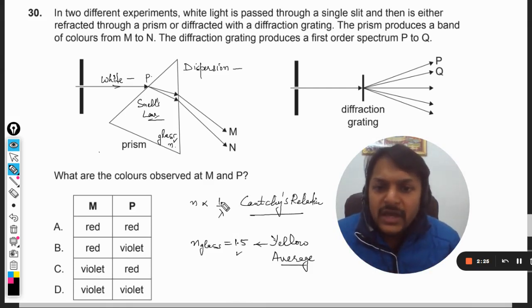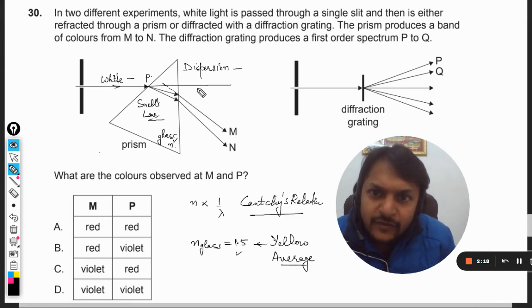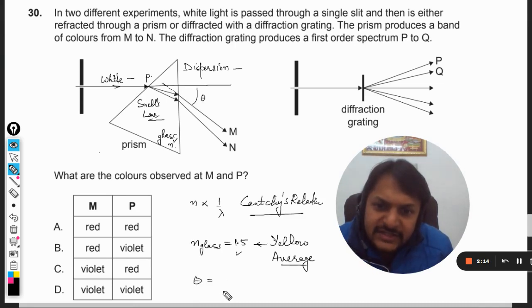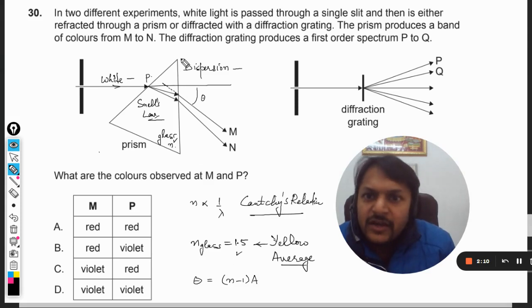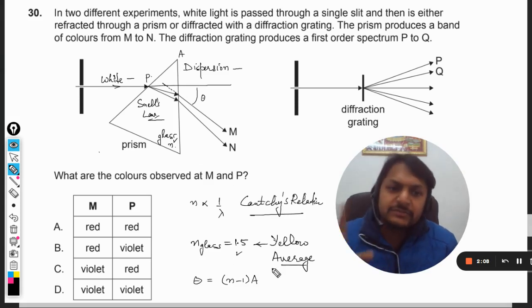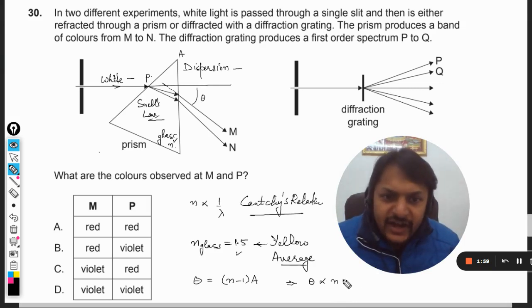Now there is another formula: angle of deflection. This θ is related as n minus 1 into a, where a is the angle of prism. From this formula we can say that deflection is directly proportional to refractive index, and refractive index is inversely proportional to wavelength.